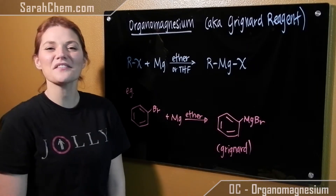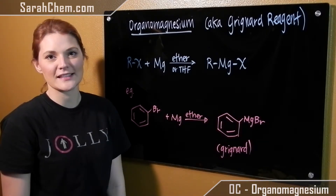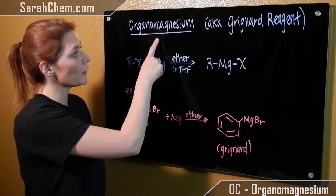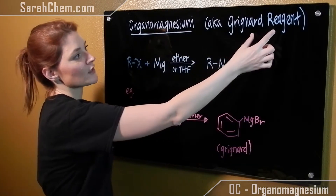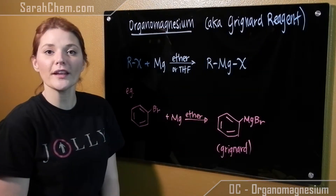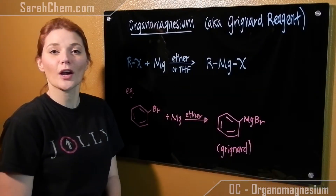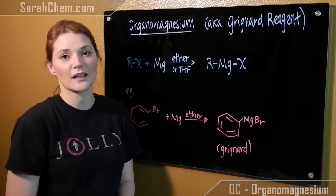Hi everyone, this is a video tutorial on organomagnesiums. Organomagnesiums are more frequently known as the Grignard reagent. Grignard reagents are used in carbonyl chemistry with ketones and aldehydes.